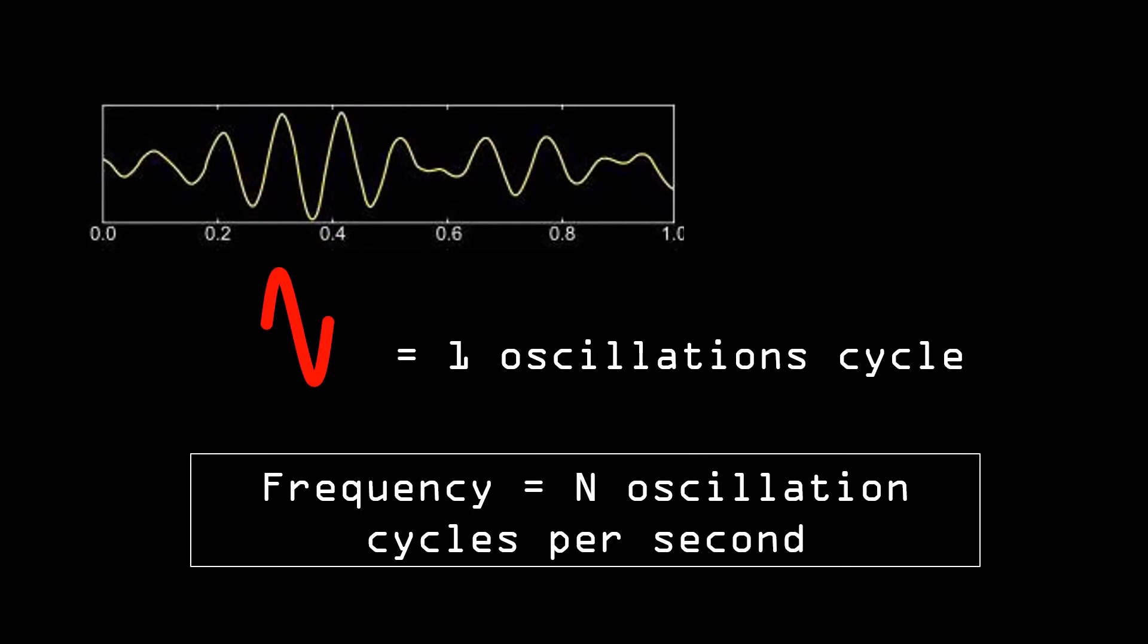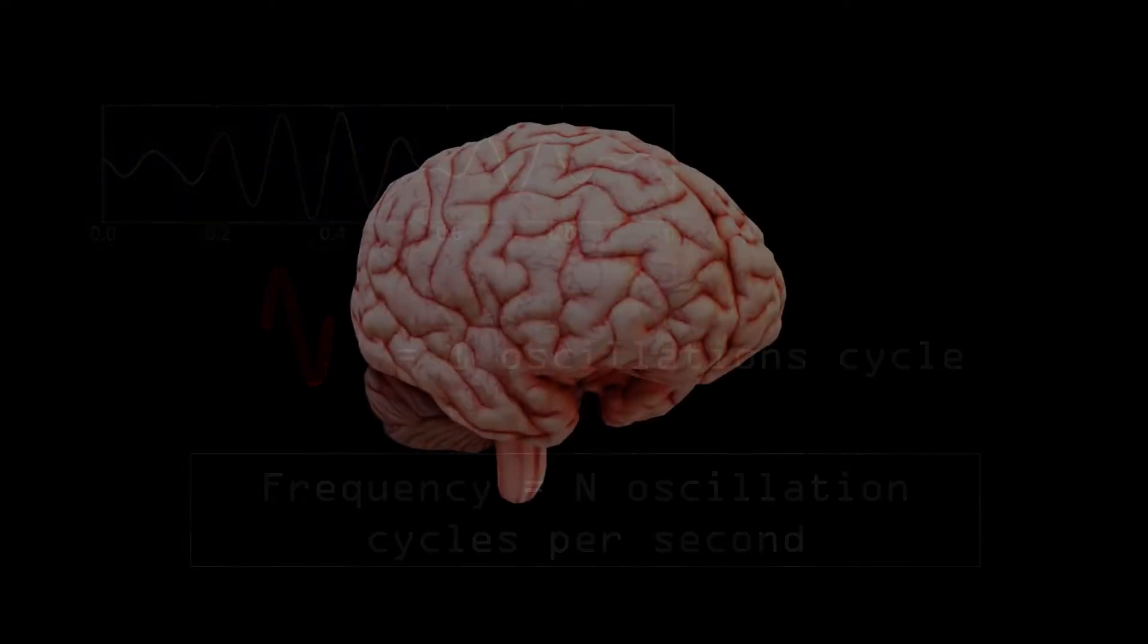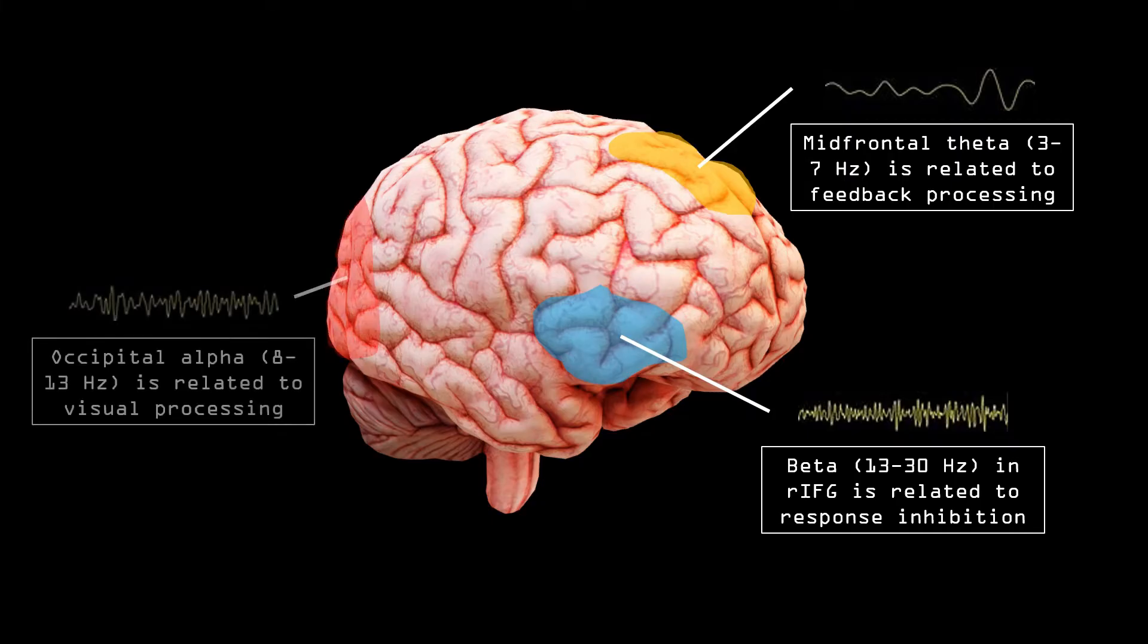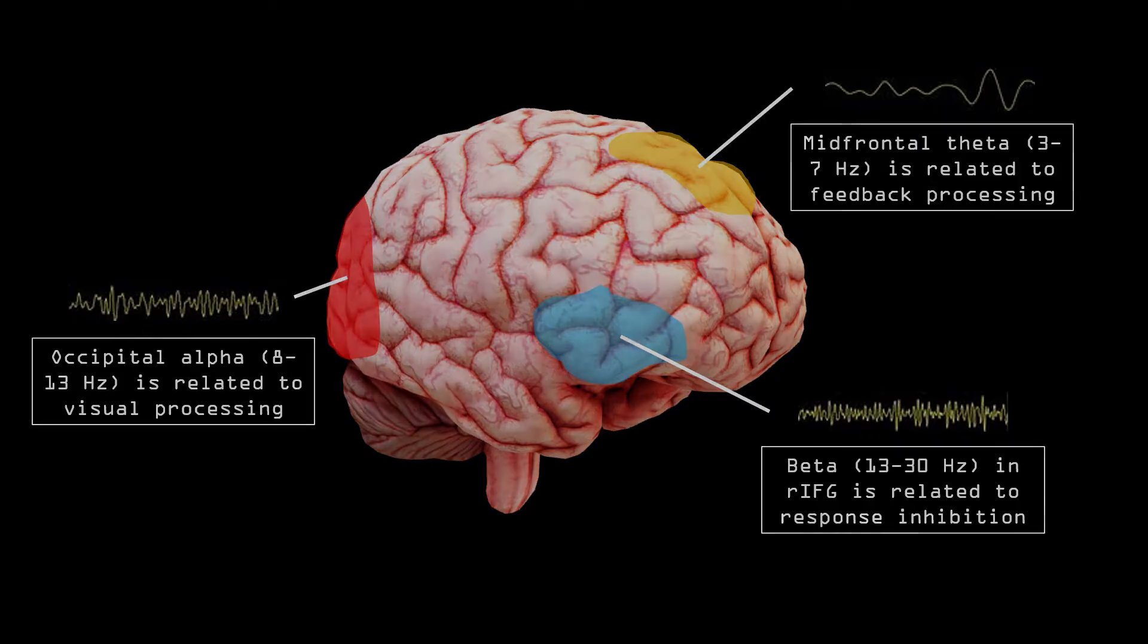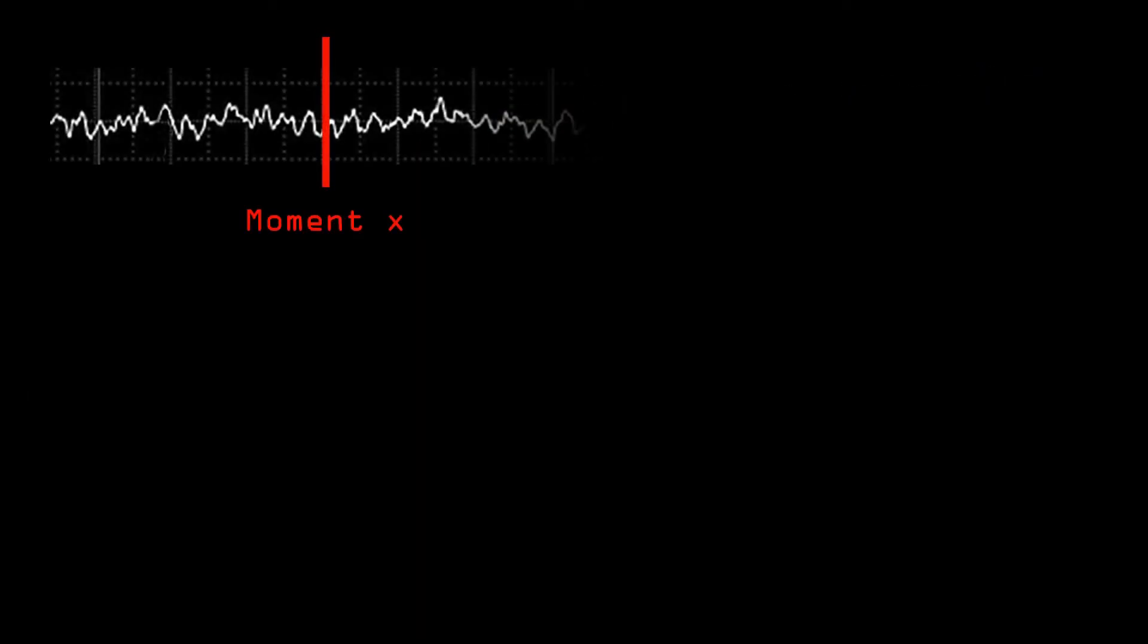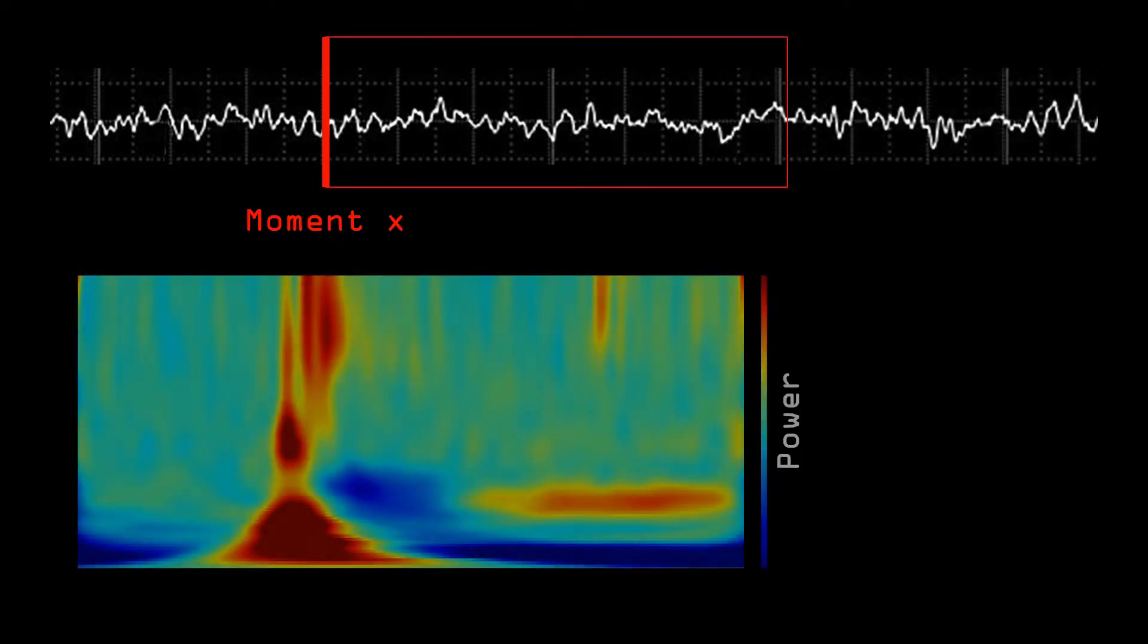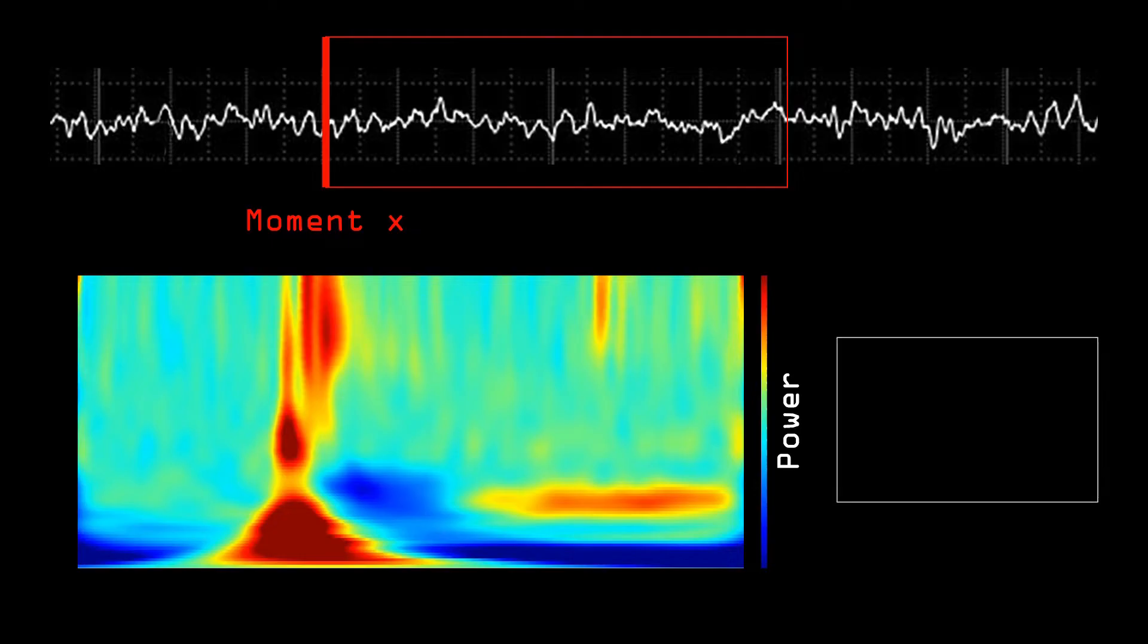From previous research, we know that waves at different frequencies have different functions at various locations in the brain. Brainwaves are constantly ongoing, but in an experimental setup, we are often interested in how these brain oscillations look at a specific point in time. One of the most prominent ways to look at this is by doing a time frequency analysis, which allows for the investigation of brainwave activity at specific moments.